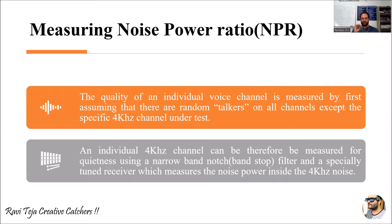To measure the noise power ratio: from several channels, a single channel is taken for test and we measure the power noise in it. Remaining all channels are measured with respect to random talkers. For the channel taken under test, we measure the quietness — how much power noise is inside that particular band. This is measured using the quietness of the frequency band using a narrow band notch or band stop filter, measured by a tuned receiver.